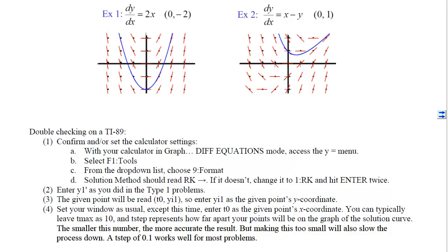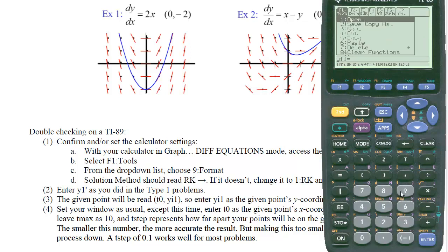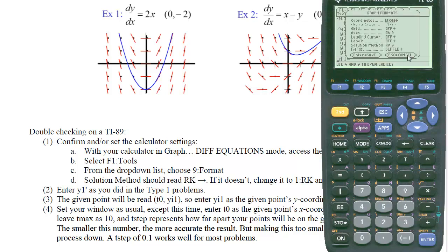To double-check these graphs on the calculator, with the calculator in differential equations mode, access the Y equals menu, select F1 Tools, then choose option 9 to Format. Verify that the solution method is RK. If it's not, arrow down, select RK, and hit enter twice. Now enter the differential equation as in Type 1 — remember x's become t's and y's become y1.